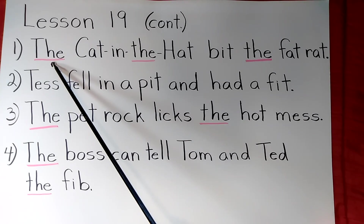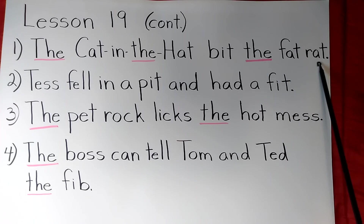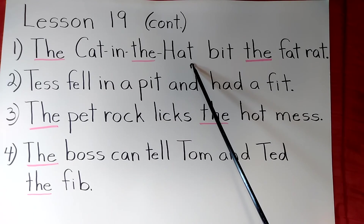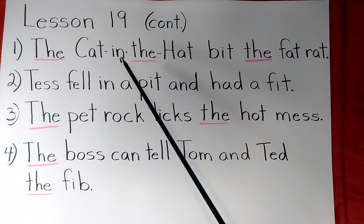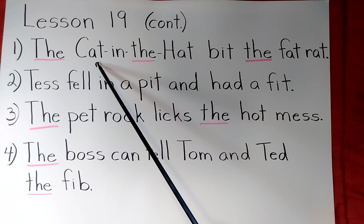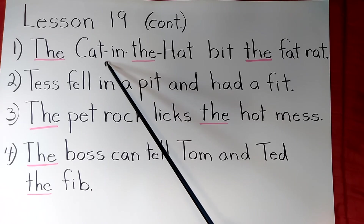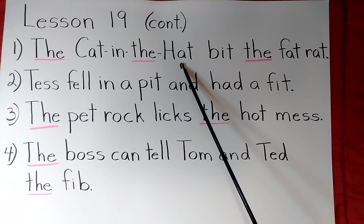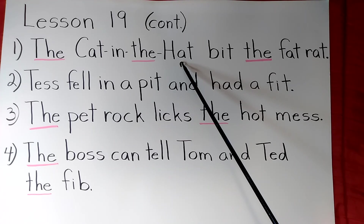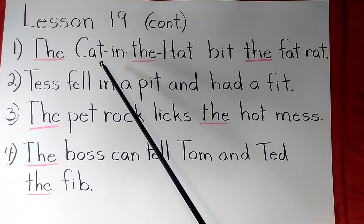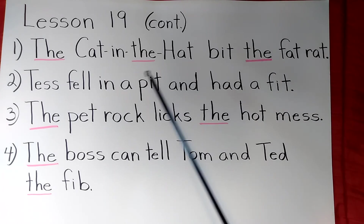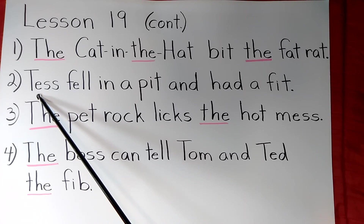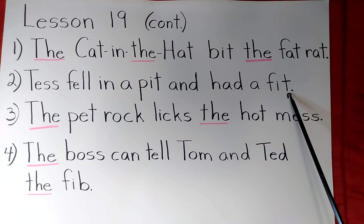My answer for number one: the cat in the hat bit the fat rat. The cat in the hat is a cat from a children's book written by Dr. Seuss. A very young student may not know that. If they do know it, they'll know the cat in the hat doesn't bite, so the answer would be false. But those who don't know may say true since cats bite rats — so it could go either way. Number two: Tess fell in a pit and had a fit. I'd put true — if I fell in a pit I'd probably have a fit too, especially if I couldn't get out easily.